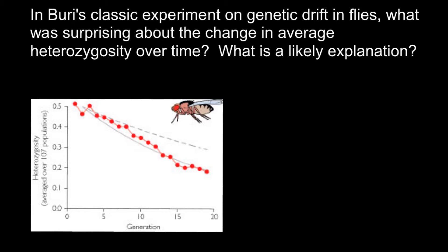Today's video is about population genetics. The question is: in Buri's classic experiment on genetic drift in flies, what was surprising about the change in average heterozygosity over time? Here you can see the experiment — this line represents the predicted results, the red dots represent actual data received from the experiment, and this line shows the mean of the experimental data.